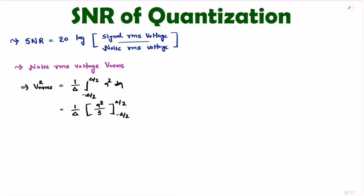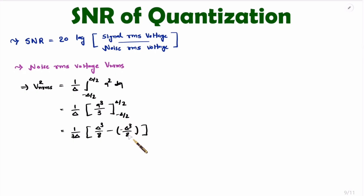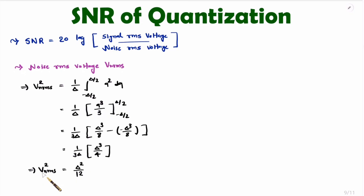If you take the 3 outside, then we can apply the limits. So q raised to 3 with upper limit delta by 2 gives delta cube divided by 8, minus the lower limit minus delta by 2, which gives minus delta cube divided by 8. The minus minus becomes plus, so we get delta raised to 3 divided by 4. Further simplifying, one delta cancels, giving delta squared divided by 12. This is the RMS value of noise voltage squared. Taking square root of both sides, delta squared becomes delta and root of 12 becomes 2 root 3. So noise RMS voltage is delta divided by 2 root 3.